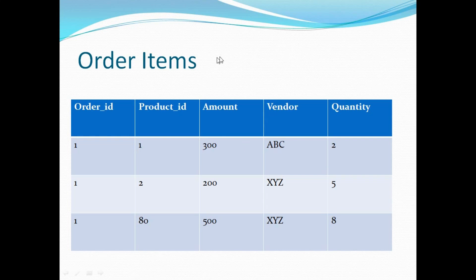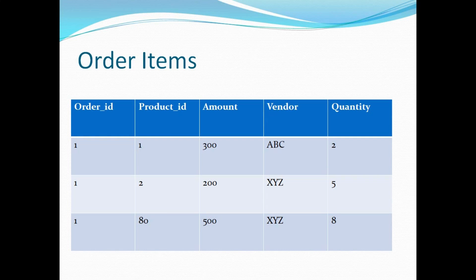The grain of the order items table is order ID along with product ID — meaning from this table I can fetch details of which products were sold as part of a particular order. Now, if I want to analyze the number of rows in the order table versus the order items table, which table will have more rows? I'll leave that question for you to answer. By the end of this tutorial you should be able to answer what the granularity of the order items table is and which table has more rows.